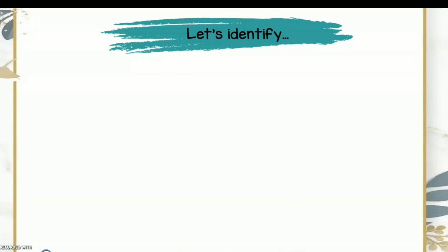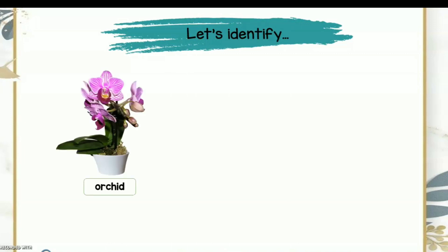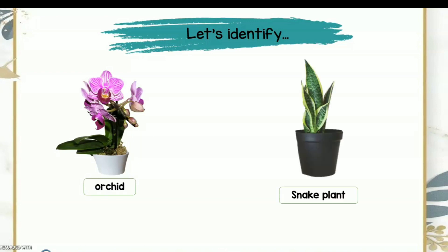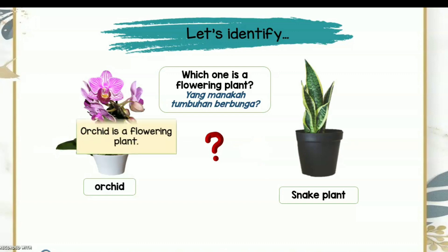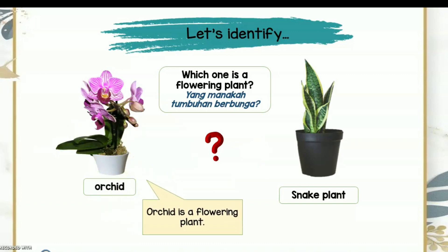Now let's identify the characteristics of plants. This is an orchid and a snake plant. Which one is a flowering plant — is it the orchid or the snake plant? Yes, the orchid is a flowering plant.